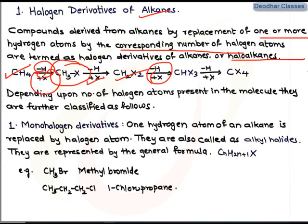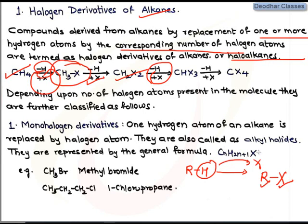The general formula for alkanes is RH. In a monohalogen derivative, this H is substituted with X, so the formula becomes RX — that is why it is also called an alkyl halide. The general formula for alkanes is CnH2n+2. One hydrogen is removed and one X is added, so the overall formula for the monohalogen derivative is CnH2n+1X.